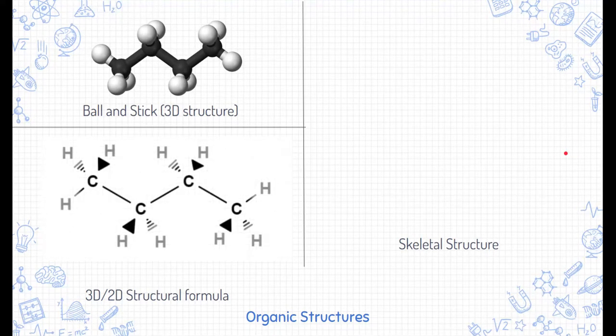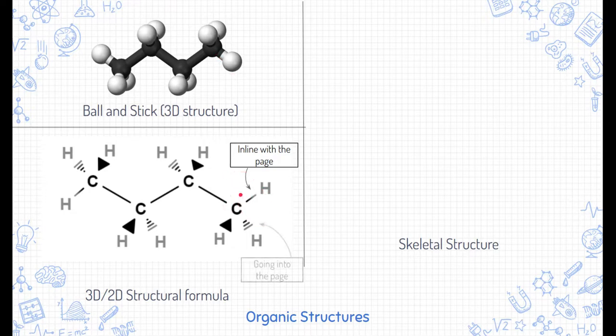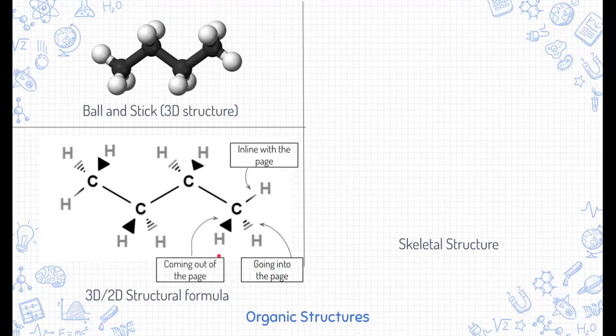We can also represent three-dimensional structures in two dimensions, such as here in the lower left-hand corner. This is very similar to the structural formula, but you might notice that the lines that are straight are in line with the page, kind of like this hydrogen bond right here. The dashed lines are the ones going into the page. Look at this hydrogen in the very back right here. That represents this hydrogen going into the page in three dimensions. The one that's a wedge or a wedged line are the bonds that are coming out of the page, kind of like this hydrogen right here is coming out of the page. This hydrogen is also coming out of the page. So we could represent three-dimensional structures in two dimensions by using lines, dashed lines, and wedged lines.